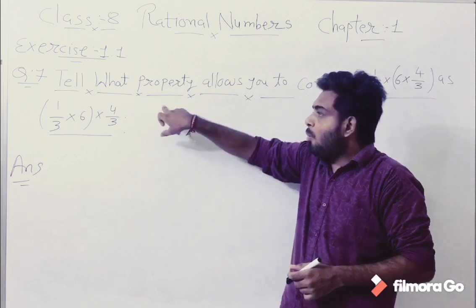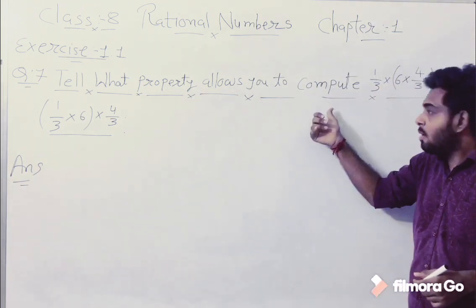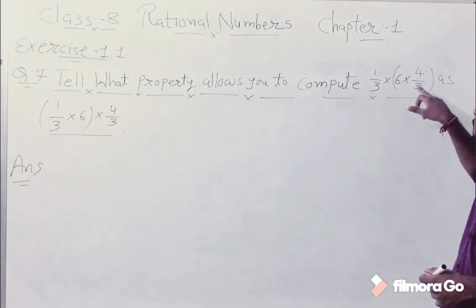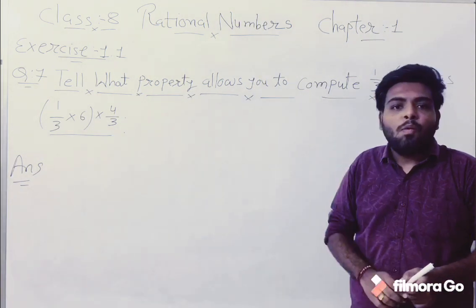Tell what property allows you to compute 1 by 3 into 6 into 4 by 3 as 1 by 3 into 6 into 4 by 3.